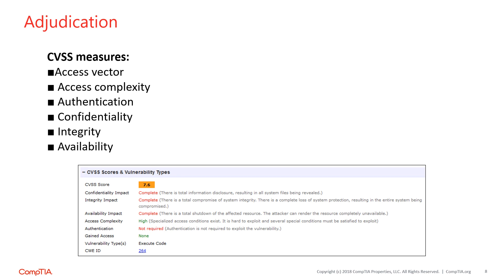The Common Vulnerability Scoring System, or CVSS, is an industry standard for assessing the severity of security vulnerabilities. It provides a technique for scoring each vulnerability on a variety of measures. Cybersecurity analysts often use CVSS ratings to prioritize response actions. Analysts scoring a new vulnerability begin by rating it on six different measures: access vector, access complexity, authentication, confidentiality, integrity, and availability. Each of these measures is given both a descriptive rating and a numeric score.